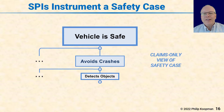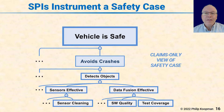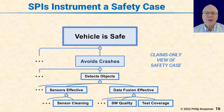It avoids crashes because it detects objects and some other things. Underneath object detection, there are things that sound less behavioral but are nonetheless important for safety. For detecting objects, your sensors have to be effective — an optical sensor full of mud is not going to be able to see anything. There also needs to be data fusion effectiveness, which may have to do with the algorithm, the implementation quality of the software, or the test coverage to validate the software.